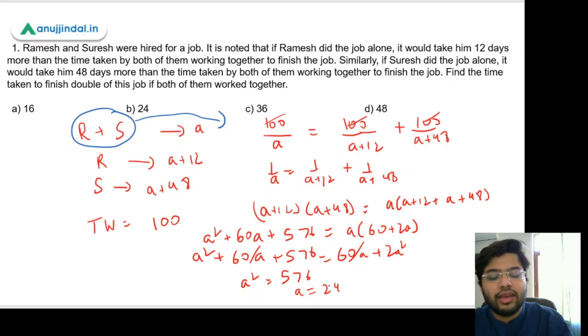Now this is the amount of time taken by Ramesh and Suresh to complete this job. But if they were to do double of this job, it will take double the time. So the time taken to finish double of this job would be 24 times 2, which comes out to be option D, 48.